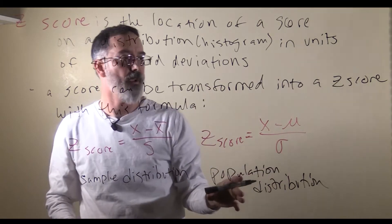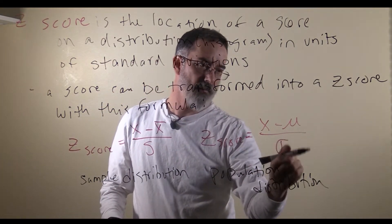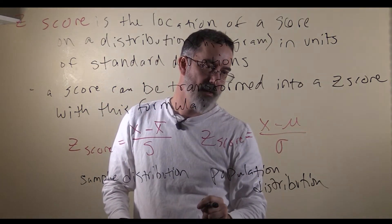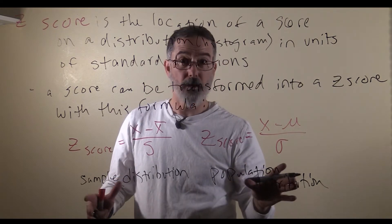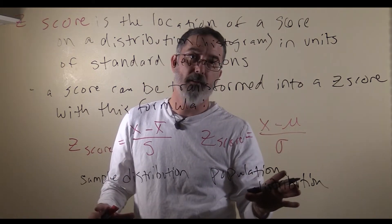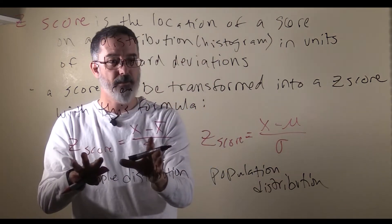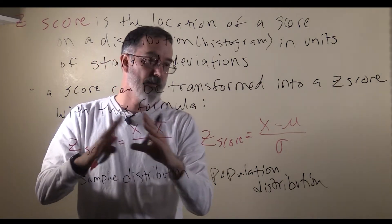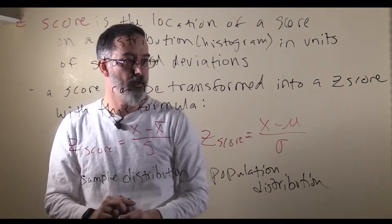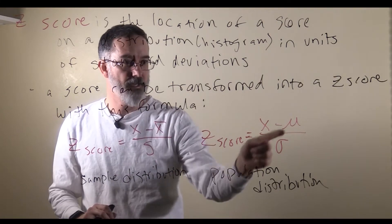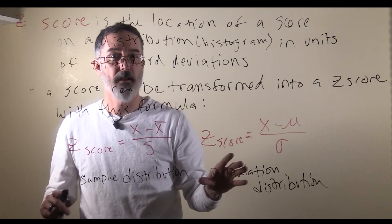You would only use the population formula if you actually know the population mean and population standard deviation for the distribution you are working with, which really does not happen very often for psychologists. So we almost always end up using the sample formula, but in this class we will do examples of both. The ideas are really the same in either one.